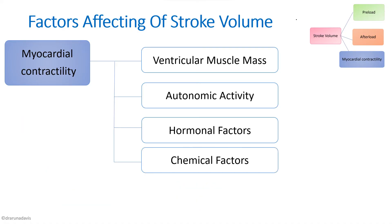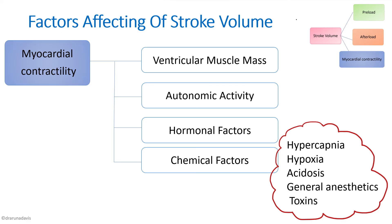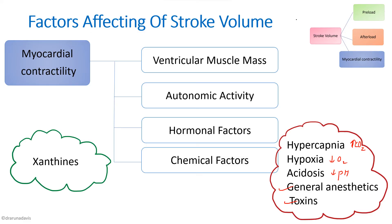Chemical factors also affect myocardial contractility. Factors that decrease contractility include hypercapnia (increased carbon dioxide), hypoxia (decreased oxygen), acidosis (decreased pH), general anesthetics, and toxins. Xanthines, which are present in caffeine and theophylline, tend to increase myocardial contractility.